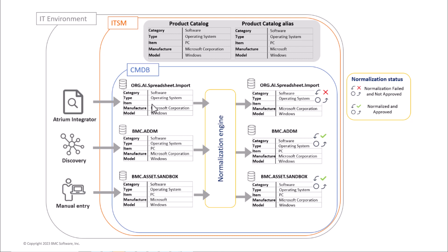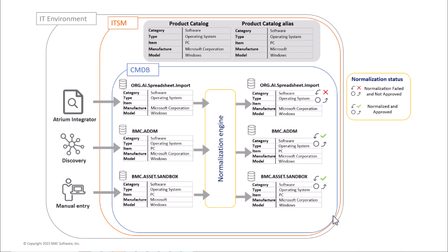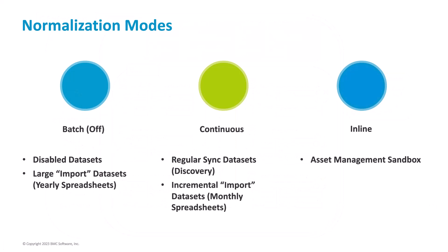All three CIs are for Windows but have different manufacturer values. For the spreadsheet, the manufacturer field is blank, so normalization will fail because no catalog alias mapping exists. From ADDM there is an exact matching entry in the product catalog, so the CI gets normalized and approved. From manual entry in sandbox, the manufacturer is 'Microsoft,' and because an alias entry exists, it also normalizes successfully.